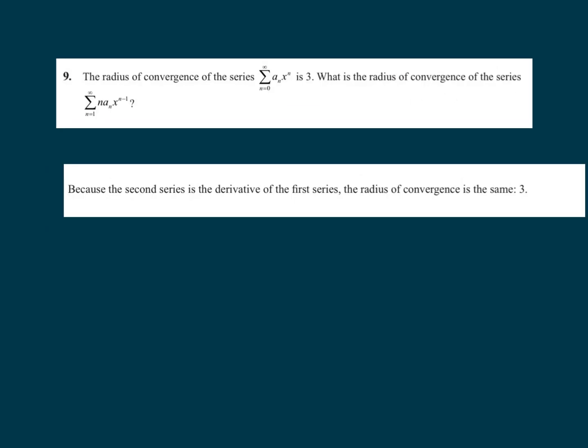The last problem: given that the radius of convergence of summation of a_n · x^n is 3, what is the radius of convergence of its derivative series? The derivative series is summation of n·a_n · x^(n-1). The radius of convergence never changes under differentiation — it remains 3. So this series also converges between -3 and 3.